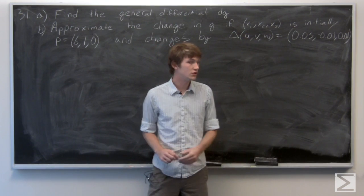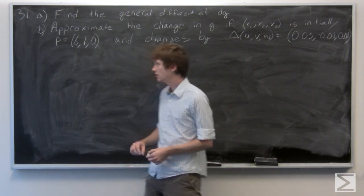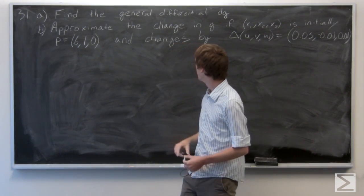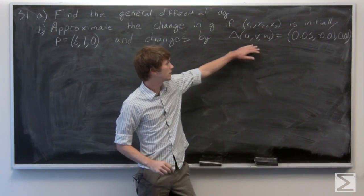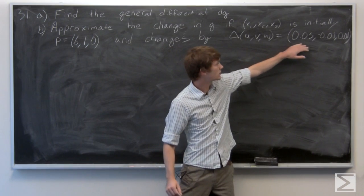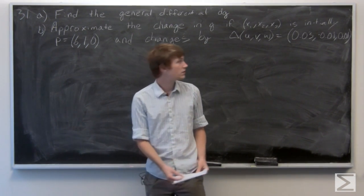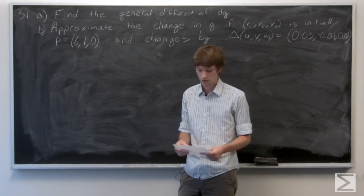If x1, x2, x3 is initially at p equals (6, 1, 0), and it changes by delta u v w equals (0.03, -0.01, 0.01).